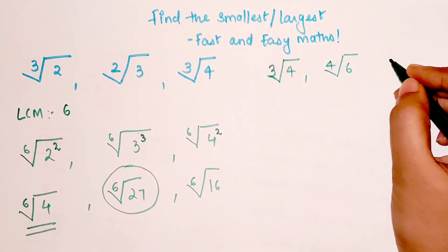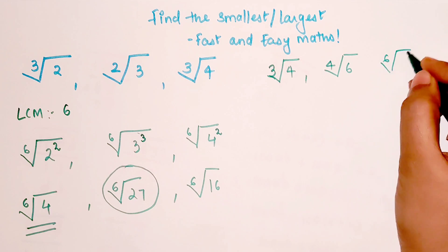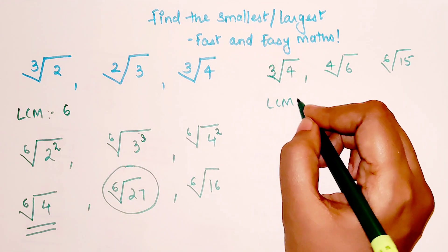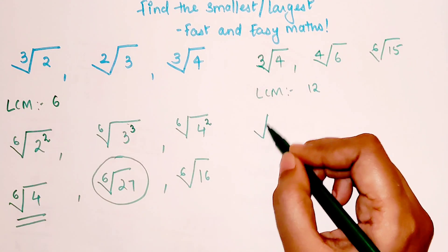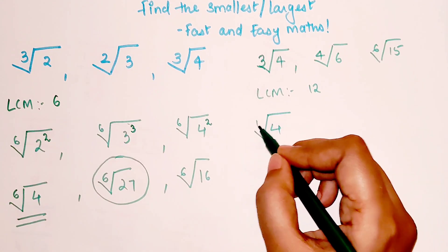Now here if we had 4th root of 6 and let's say 6th root of 15, again let's do LCM. LCM is 12 in this case.